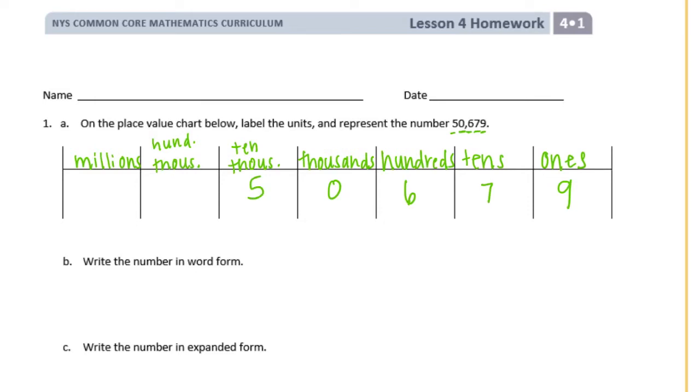Let's write the number in word form. So we're just going to write it how we say it: fifty thousand six hundred seventy-nine.